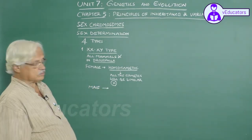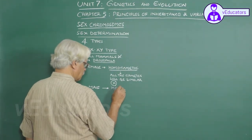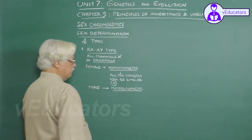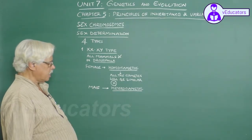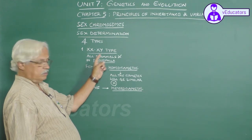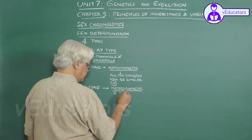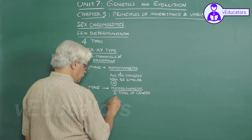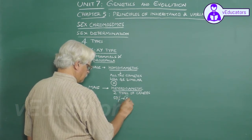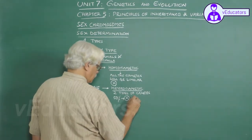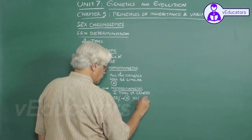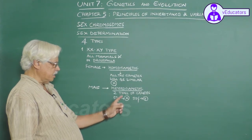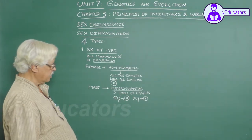Whereas males are described as heterogametic, because the sex chromosomes are of two types, so two types of gametes are formed — 50 percent carrying the X chromosome and the other 50 percent carrying the Y chromosome. Out of the sperms produced, 50 percent carry X and 50 percent carry Y.